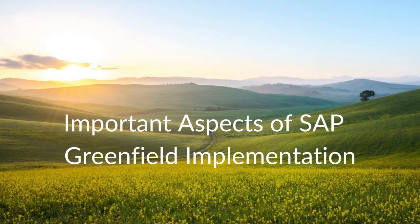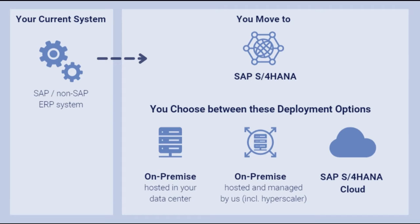Here are the key characteristics and steps involved in a greenfield implementation. Key Characteristics: Fresh Start — greenfield implementation allows organizations to start with a clean slate, free from the constraints and legacy configurations of existing systems.